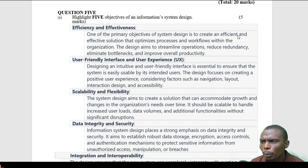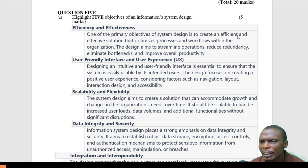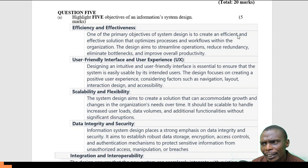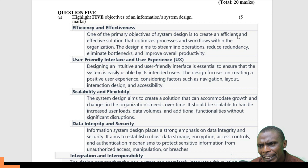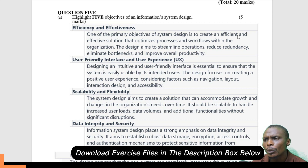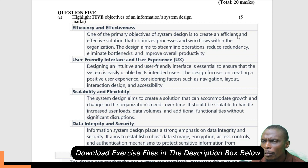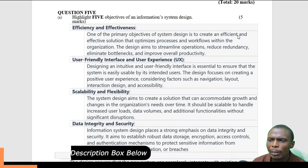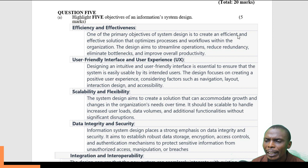Highlight five objectives of an information system design. The first objective is efficiency and effectiveness. It ensures that the system design creates an efficient and effective solution, minimizing errors, complaints, and bottlenecks. This results in a system that is optimal, not redundant, and has streamlined operations within the system.